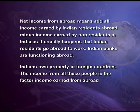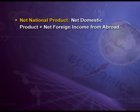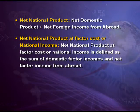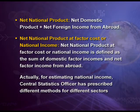Net National Product is equal to Net Domestic Product plus net foreign income from abroad. The next and last term is Net National Product at factor cost, or National Income. Net National Product at factor cost, or National Income, is defined as the sum of domestic factor income and net factor income from abroad.